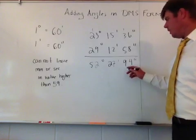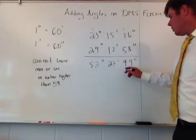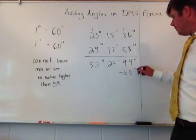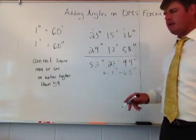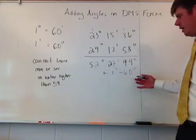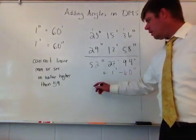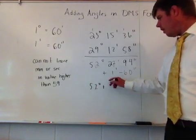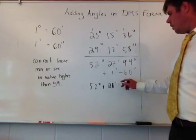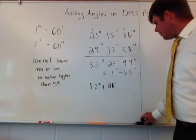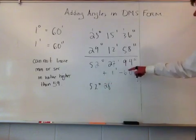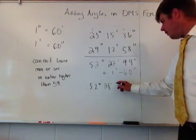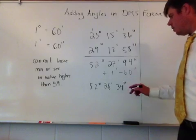I do the same exact principle—it's like counting time. I just take away the 60 seconds. When I take away the 60 seconds from here, I'm adding one minute to this. I'm not changing the value, just changing the look of it. So I get 52 degrees, 28 minutes, and 94 minus 60 is 34 seconds.